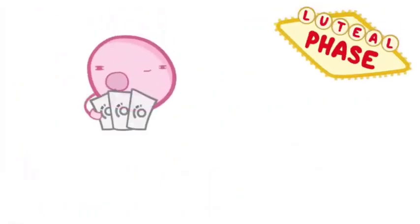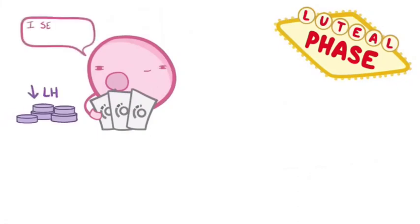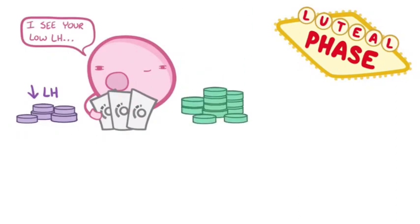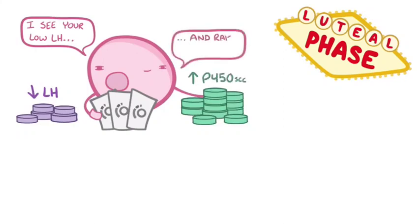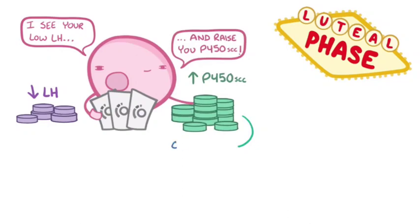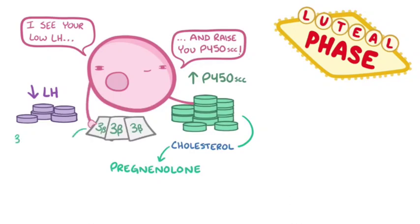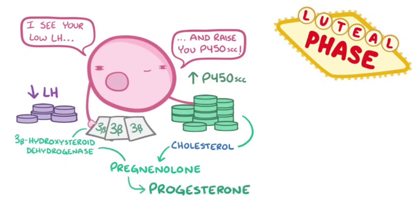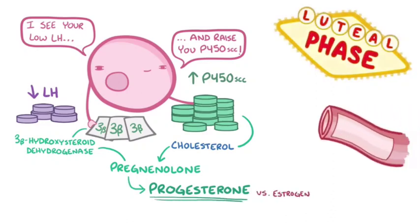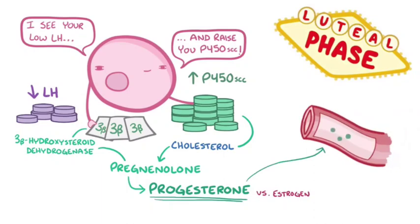Something interesting happens inside the granulosa cells during the luteal phase. They respond to the low luteinizing hormone concentrations that are present after ovulation by increasing the activity of another enzyme called cholesterol side-chain cleavage enzyme, or P450SCC for short. This enzyme converts granulosa cell cholesterol into pregnenolone. What's more, granulosa cells also have some 3-beta-hydroxysteroid dehydrogenase of their own to convert that pregnenolone into progesterone. So during the luteal phase, granulosa cells secrete more progesterone than estrogen. Progesterone is then released into the blood, bound by plasma proteins like albumin and transcortin, and transported to target tissues.